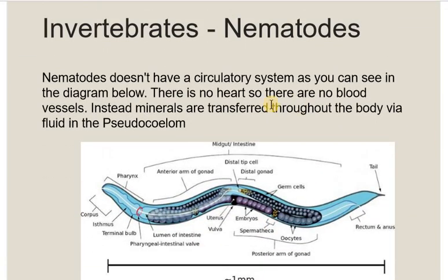If we take the example of nematodes, they do not have a circulatory system. In the nematode body, the fluid directly bathes different body tissues. There are no specialized heart or blood vessels present. The fluid, in the form of hemolymph, moves freely through the body.